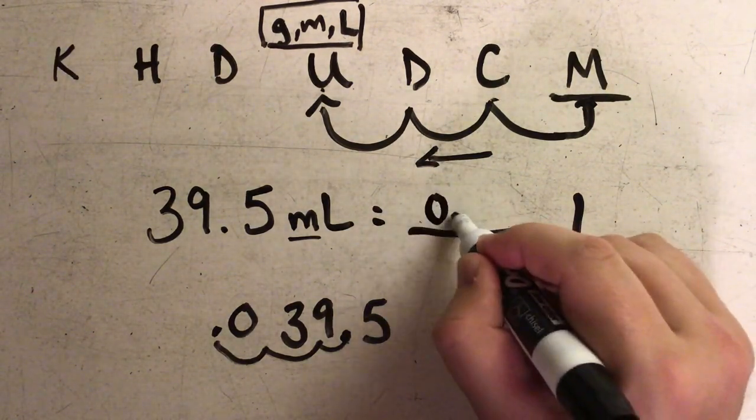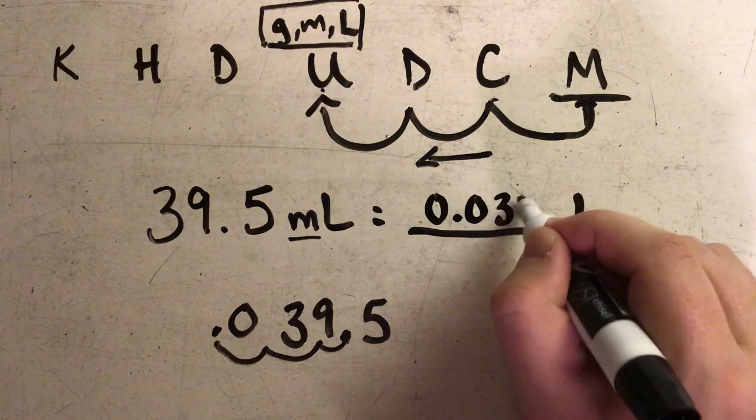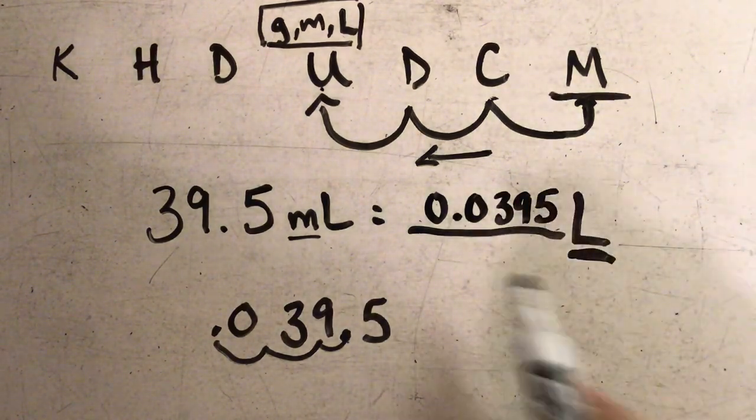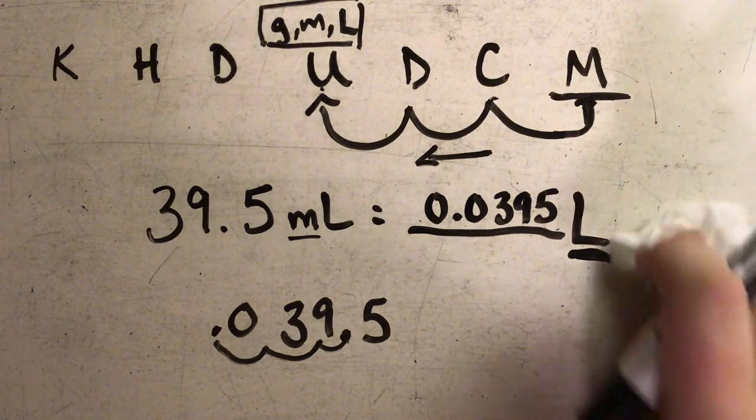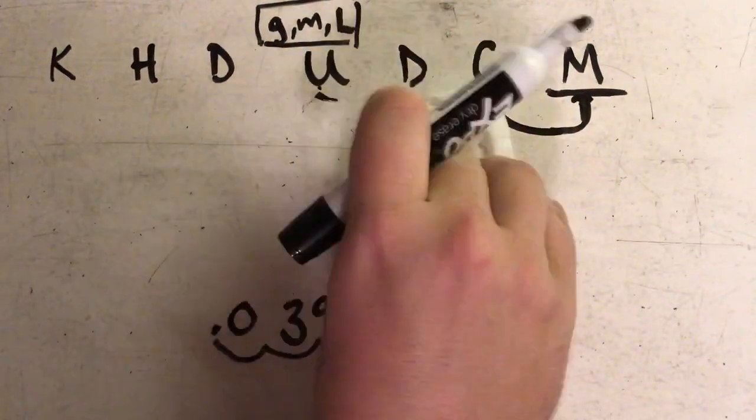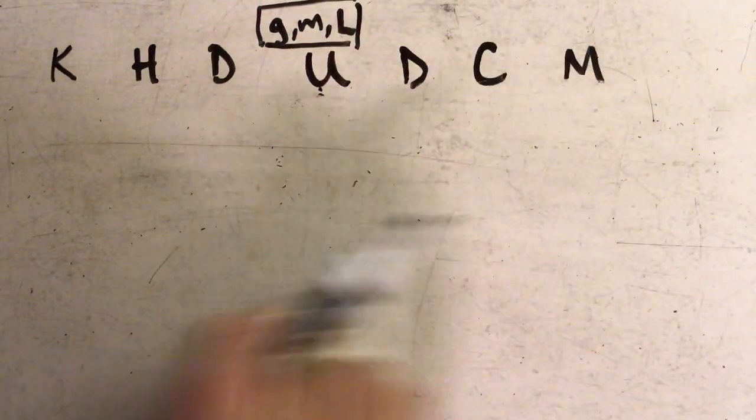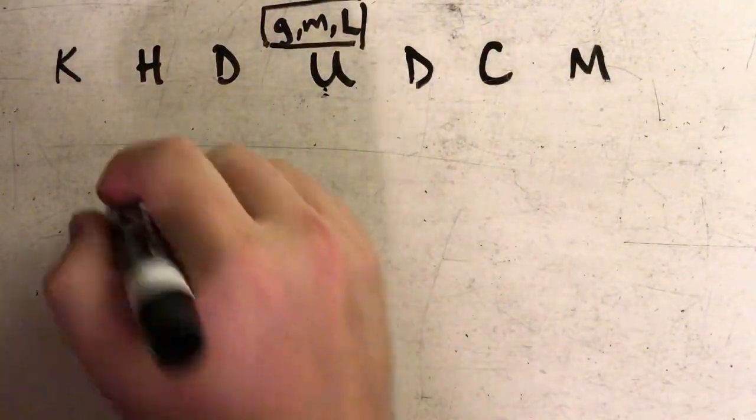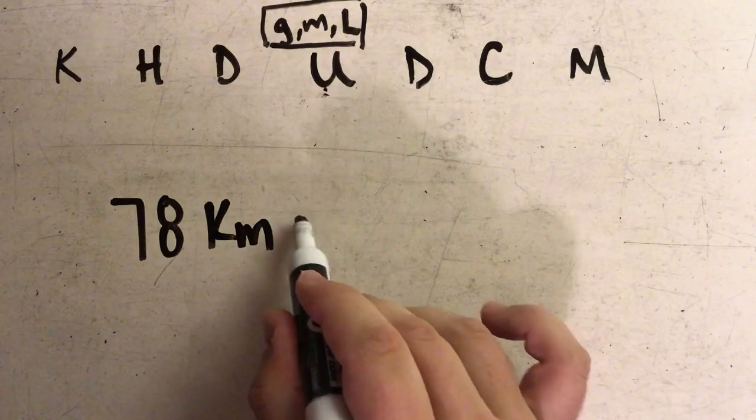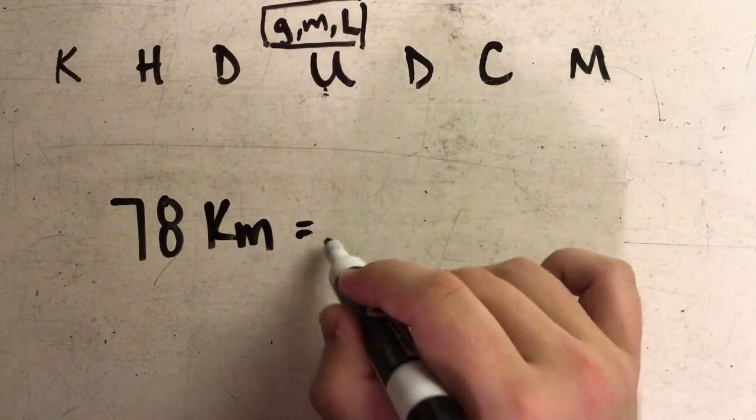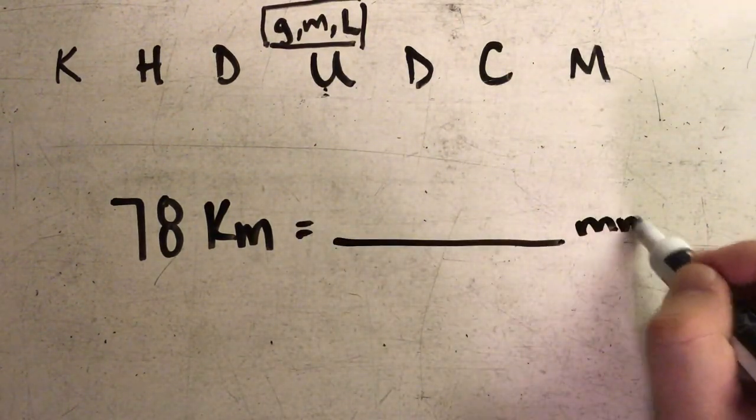Let's do one more example, and this example will make kind of a larger jump. Let's say I have 78 kilometers and I'm trying to get to millimeters.